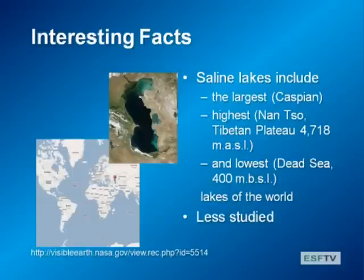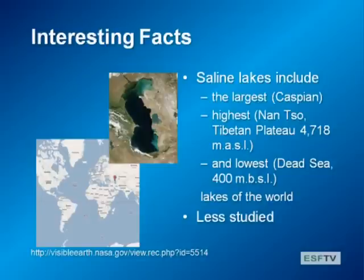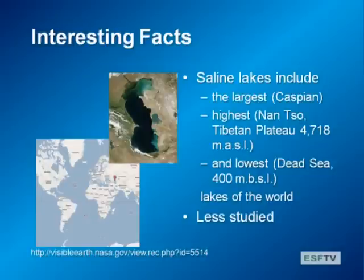Saline lakes have some pretty interesting characteristics—just a few party facts. The first is that saline lakes include the largest lake on the planet, the Caspian Sea, which contains 75% of the world's saline lake volume. That's actually five times the surface area of Lake Superior, which is the largest freshwater lake by surface area. Saline lakes also include the highest lake on the Tibetan Plateau, which is almost 5,000 meters above sea level, and they include the lowest lake, the Dead Sea, which is actually below sea level. They are also much less studied, partly because the water is too saline for drinking or irrigation. But the river water going into these lakes may be utilized by people, and that'll be one of the effects we talk about of humans—just like we mentioned the Aral Sea case study earlier in the class.